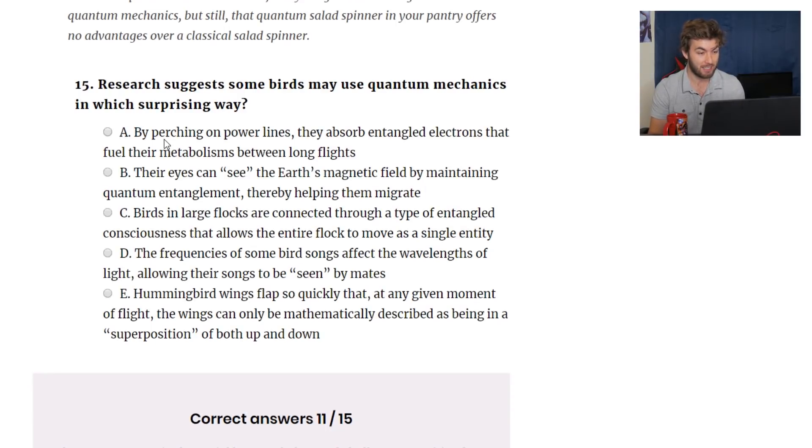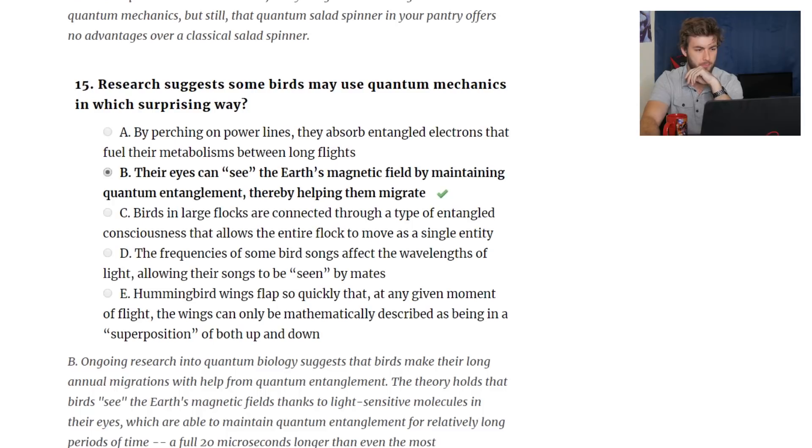Birds in large flocks are connected through a type of entangled consciousness that allows the entire flock to move as a single entity. I doubt that more. The frequencies of some birds' songs affect the wavelengths of light. What? Allowing their songs to be seen by mates. No. Hummingbird wings flap so quickly that at any moment of flight, the wings can only be mathematically described as a superposition of both up and down. That's so clever. That's a clever question. I mean, I can't say clearly anything. I think I want to say it's B. However, the quantum entanglement part is throwing me off a little bit. I wouldn't have thought the magnetic field thing had anything to do with entanglement. But let's go ahead, let's try it out. So it was.